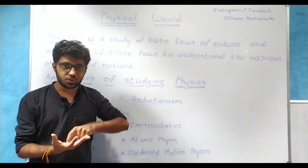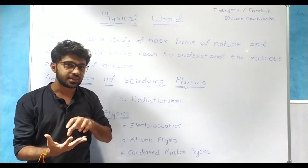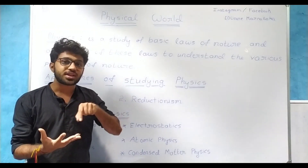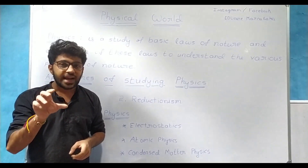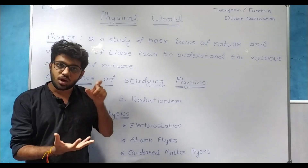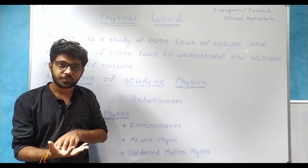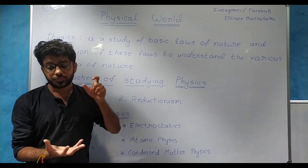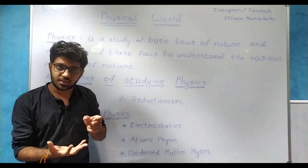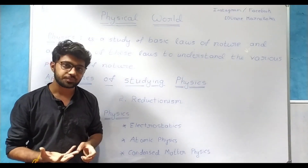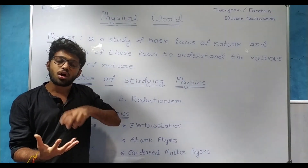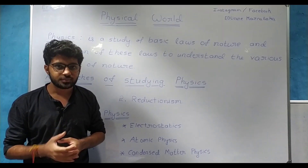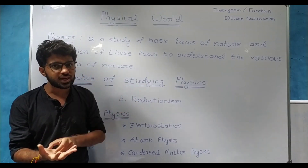We talk about the Earth and satellites. When satellites revolve around the Earth, gravitation is the force. Using Newton's law of gravitation, we understand that these satellites revolve in their orbits. The moon is revolving around the Earth, and there are many planets revolving around the sun. The reason is gravitation. All these phenomena can be studied by understanding Newton's law of gravitation.